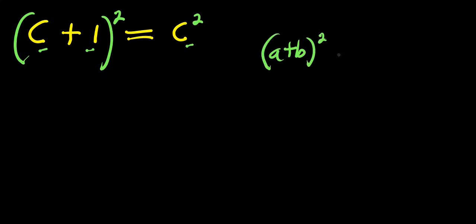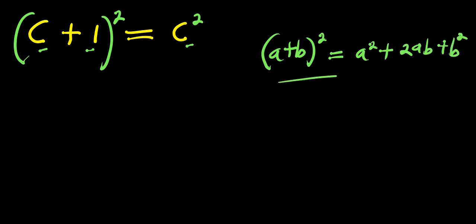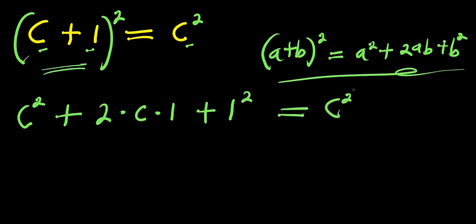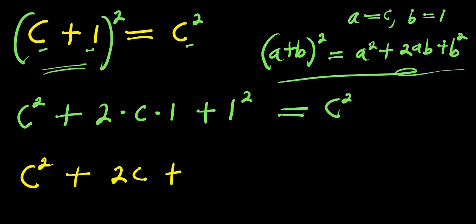For instance, if you consider (a + b) raised to the power of two, this equals a squared plus 2ab plus b squared. Now using this identity, that means we are going to have c squared plus two times c times one plus one squared, and this equals c squared — considering that a here represents c while b represents one. So we have c squared plus 2c plus 1 equals c squared.